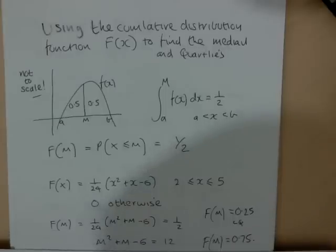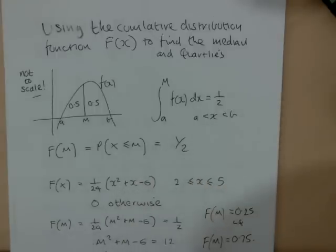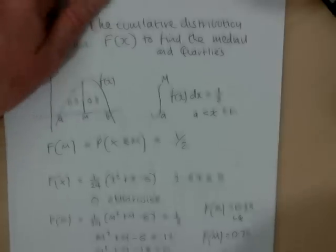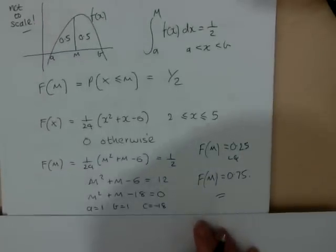We then multiply through by 24, so you'll see that my 24 disappears on the left, and 24 times a half gives me 12, and bring the 12 over to the left hand side to form a quadratic equation. So let me set this up so you can see what I'm talking about, equal to 0.